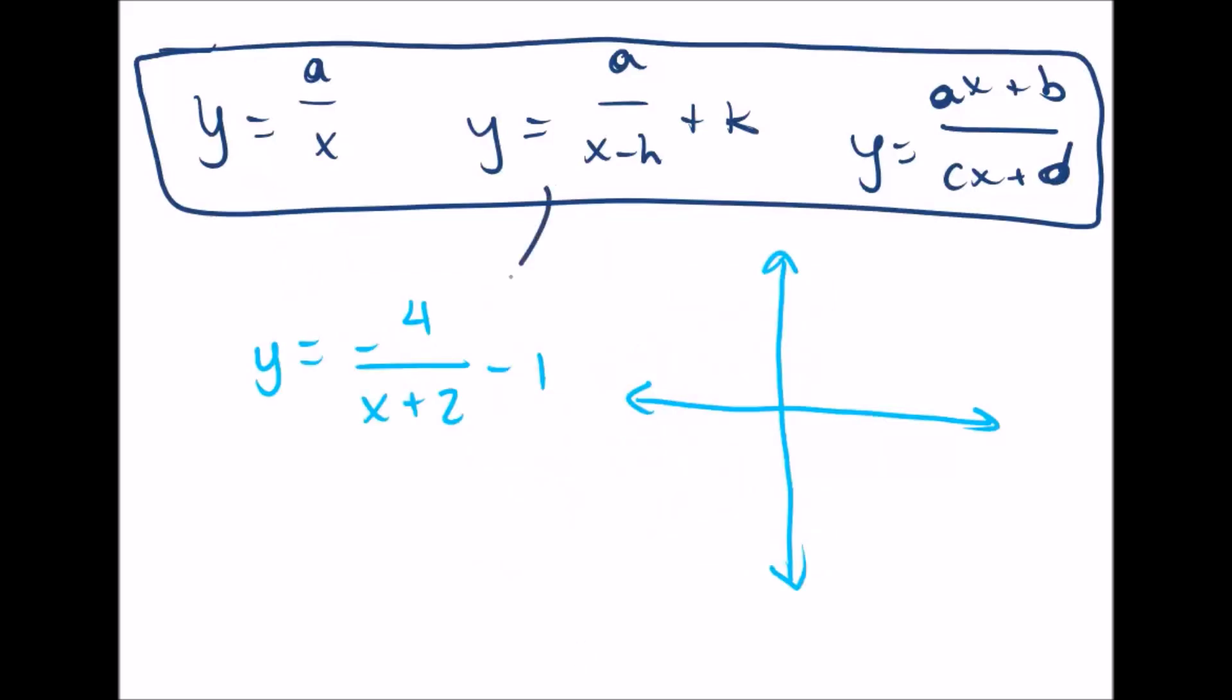Let's take a look at the middle type, where we have a, h, and k, and a is not one. A in this case is negative four.